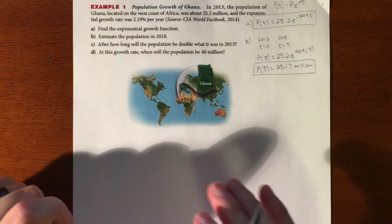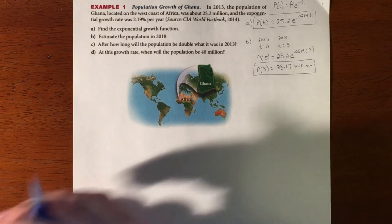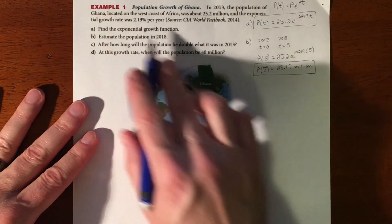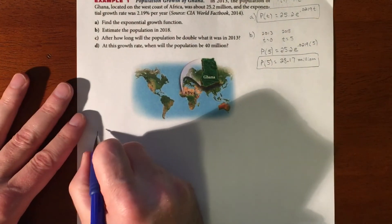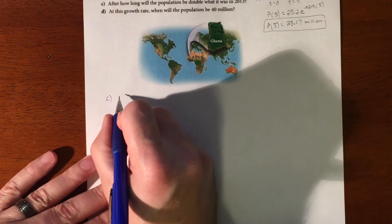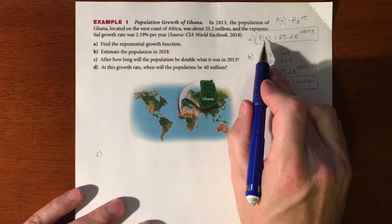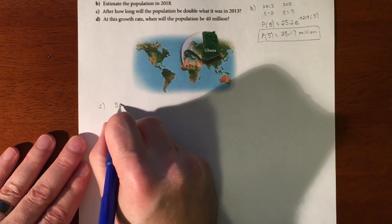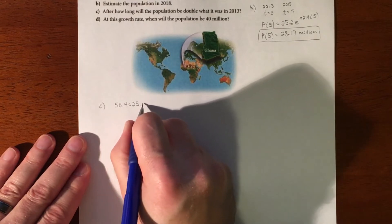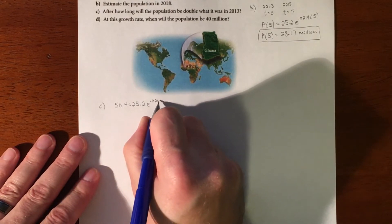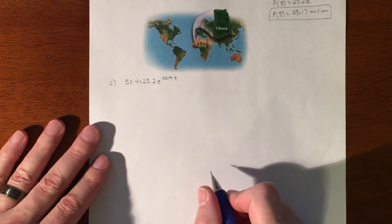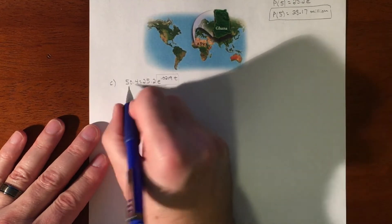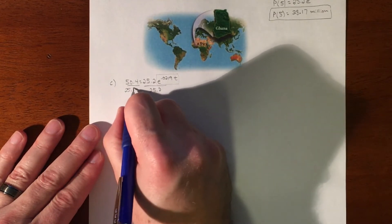All right, so next situation, they're asking how long will it take for the population to double from 2013. If it's growing at this rate, how long is it going to take to double? We don't know the time, but what we do know is the double. So we're going to go from 25.2, our double is going to be 50.4, which equals our initial equation. But we don't know the time. So we're going to try to isolate this piece. We're going to divide by 25.2, divide by 25.2, and that equals 2.